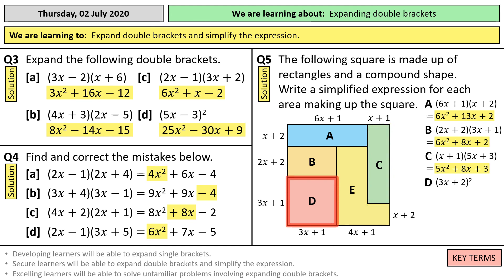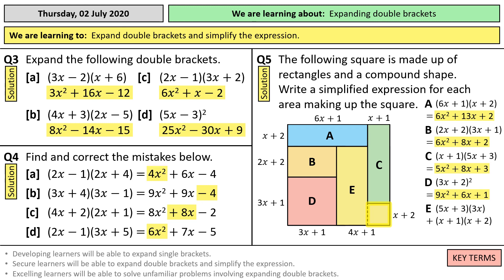For D, it's 3x plus 1 all squared, which gives you 9x squared plus 6x plus 1. And then E is 5x plus 3 — which is the height of B and D together — times 3x, and that little area is x plus 1 times x plus 2. So all together you get 16x squared plus 12x plus 2. That got quite tricky in the end there, but hopefully you did all right with those.